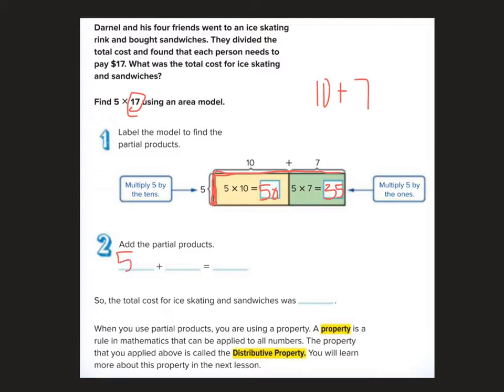Okay, so then if I add 50 plus 35, that's a lot easier to add. Look at that. 85. Now, 5 times 17, it would probably take me a little while to do it in my head. I could count by 5 seventeen times. Or this is kind of using the distributive property, using an area model to do that. So the total cost of the skating and sandwiches was $85. Don't forget your label.